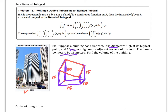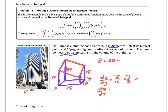At (0, 0) the height is 20, so I start with 20 and add a slope in the x-direction and a slope in the y-direction. The change in z with respect to y gives a slope of negative 1/3. The change in z with respect to x gives a slope of negative 1/2, since z drops by 5 over 10. So the plane equation is z = 20 − (1/2)x − (1/3)y.